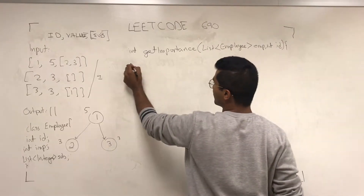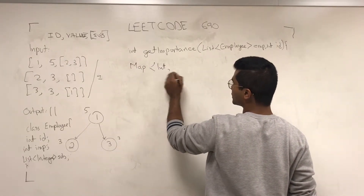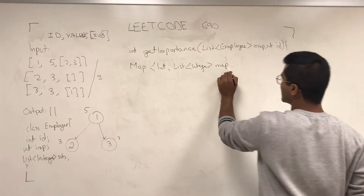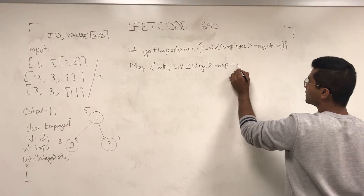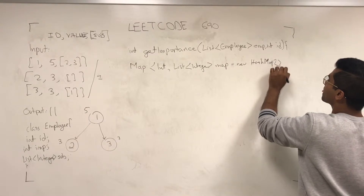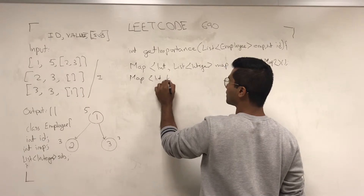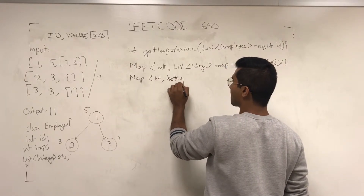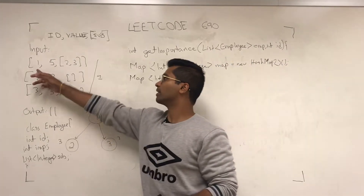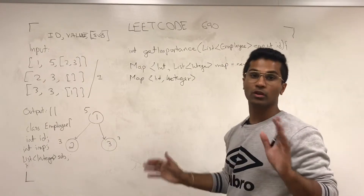The first thing is going to be a map of integers and a list of integers — this is going to be the total map, which is the adjacency list. And then I'm going to have a map of values, which is pretty much going to be like: Employee 1 has 5, 2 has 3, 3 has 3. And this one is just going to be the adjacency list.